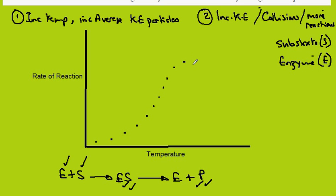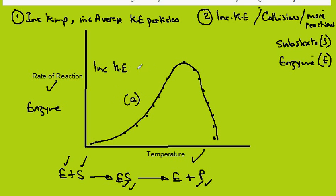However, we find that we reach a temperature after which the rate of reaction decreases quite dramatically. Drawing the curve, we have this asymmetrical curve for the effect of temperature on the rate of an enzyme-catalyzed reaction. So in section A, we are increasing the kinetic energy of the reactants, which is the enzyme and the substrate, and so we have more collisions and more reactions.